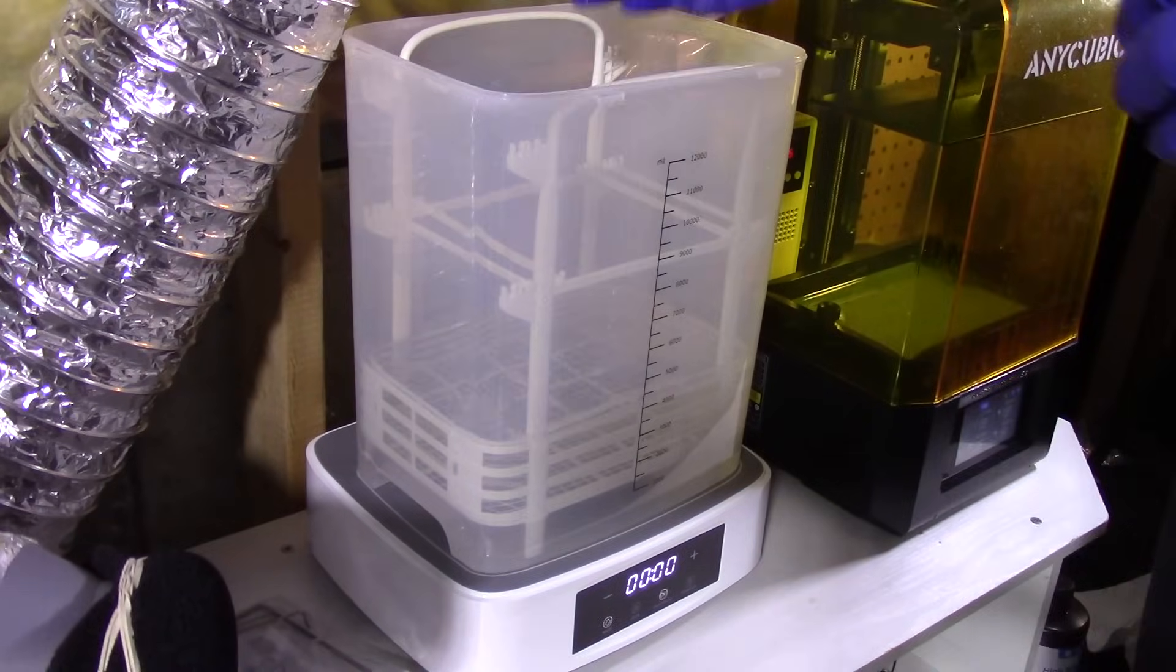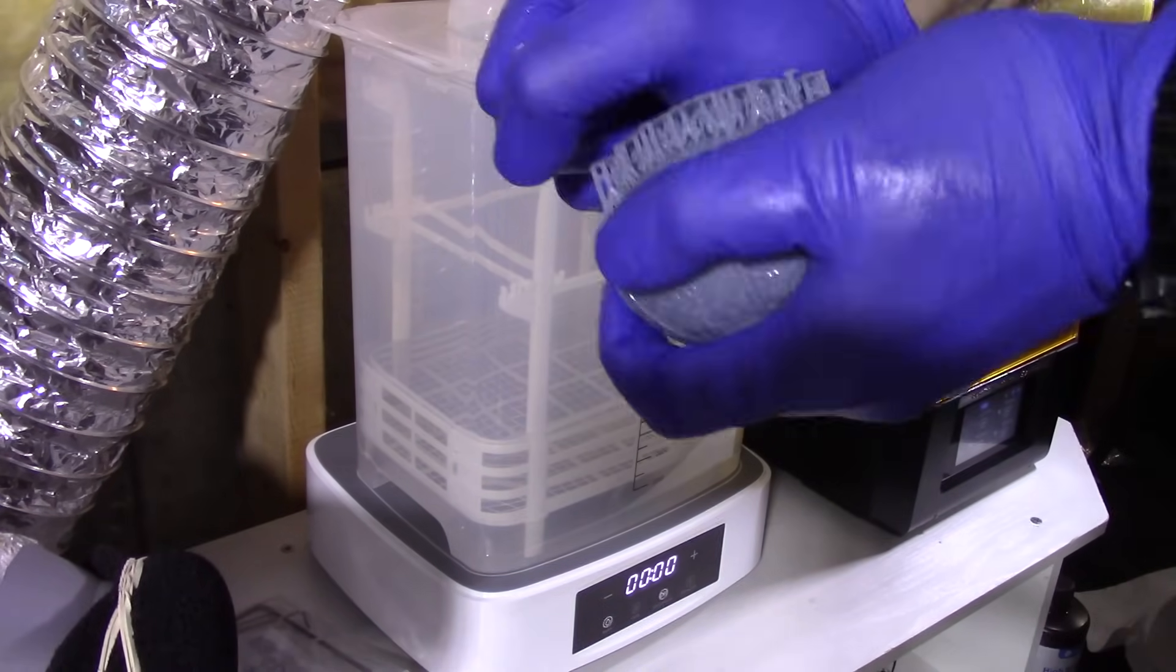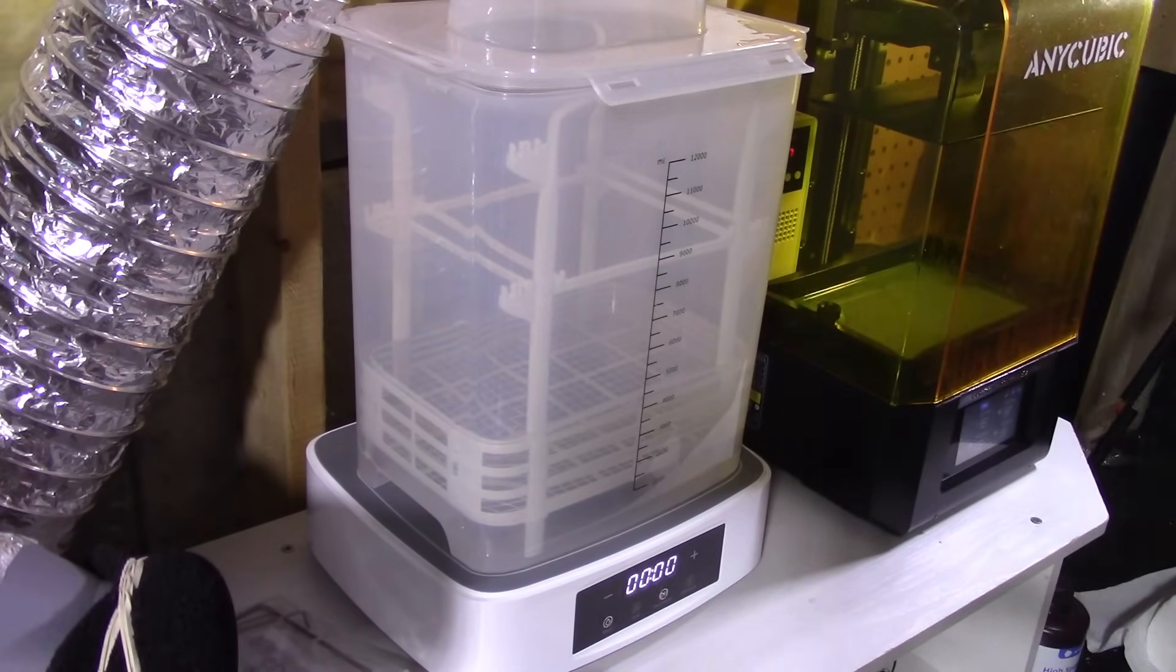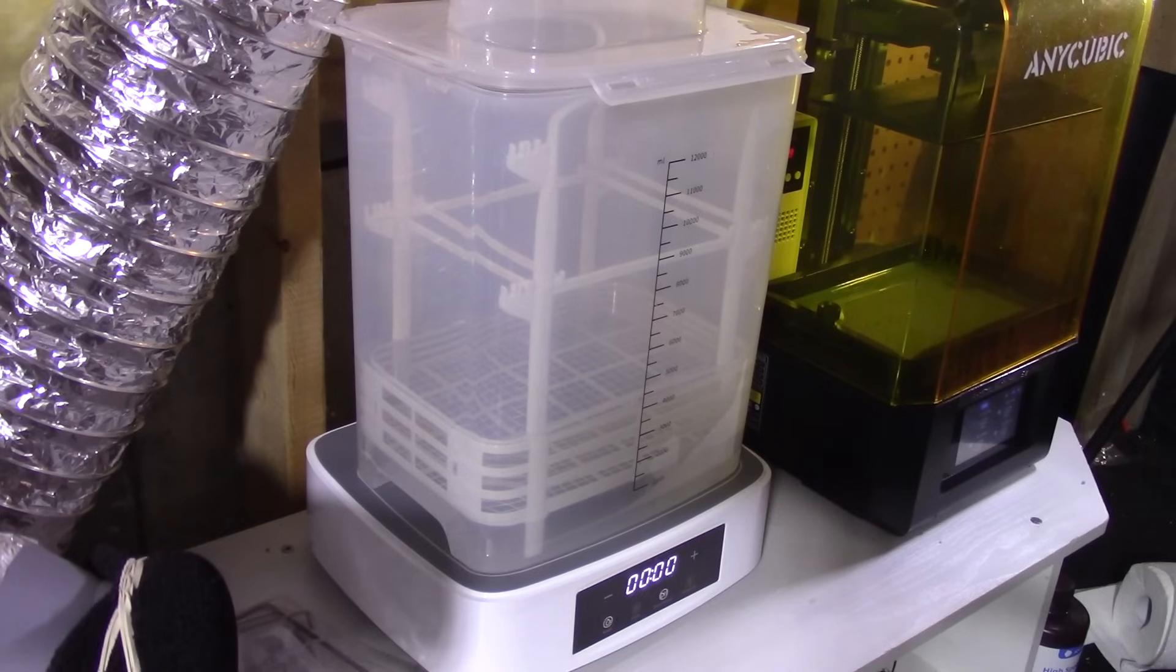Once the washing is done, remove your print. Put the bucket aside, you can move the ISO into another bucket, as it is not recommended to keep it in the wash and cure station bucket. Dry the print off the best you can, or let it air dry for a minute. Remove the supports.